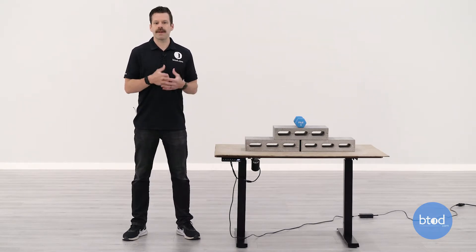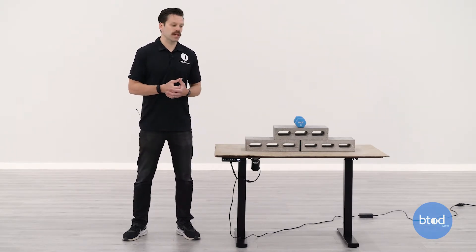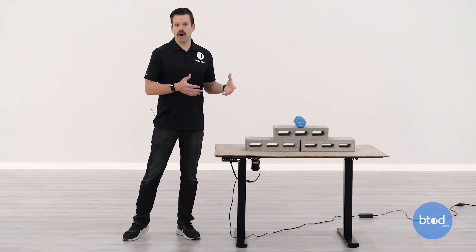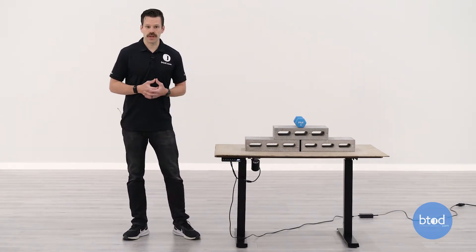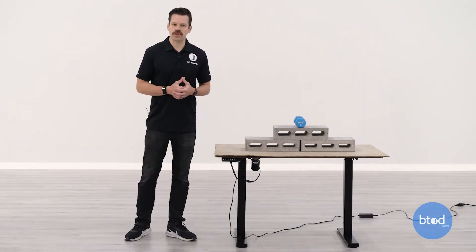This desk has a range of about 28.5 to a little bit over 46 inches, so we're going to be looking at both the bottom and the max height and two heights in between as we check the left to right wobble and the front to back rocking motions. With that, let's get started with our first test.